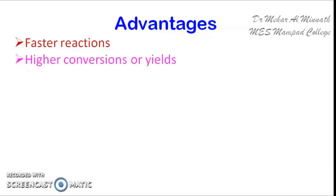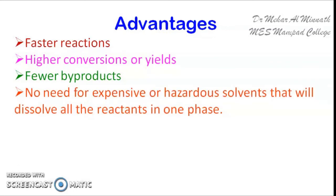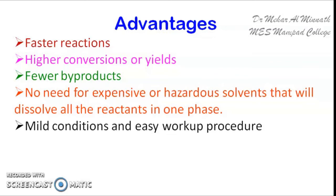Now, coming to the advantages of PTC. As in every catalytic reaction, if you use PTC the reaction will be faster and you get better yield — there will be high yield and fewer byproducts. Also, we need not go for expensive solvents which would dissolve all the reactants together in a single solvent, and hence we can avoid the use of excess chemicals. When we use PTC, we need to provide only mild conditions and the procedure will be easy.